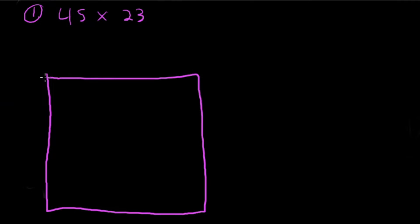Our first problem is 45 times 23. Pause this video, give it a shot on your own, and then we'll go through it together. Welcome back — let's jump into this one. We're going to do area model first and then standard algorithm. First thing we need to do is break these numbers apart.